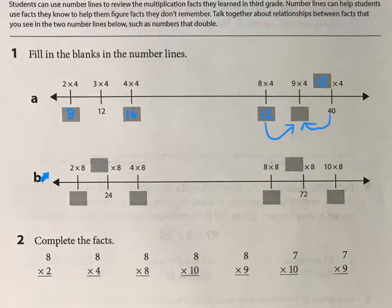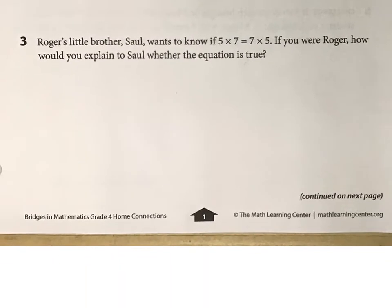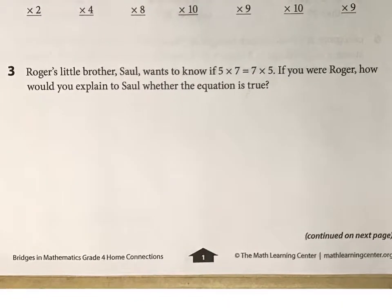Same with B, and then same idea with number 2 — I don't think you need any help with that. So let's take a look at some of these other ones. Roger's little brother Saul wants to know if 5 times 7 is equal to 7 times 5. If you're Roger, how would you explain to Saul whether the equation is true?